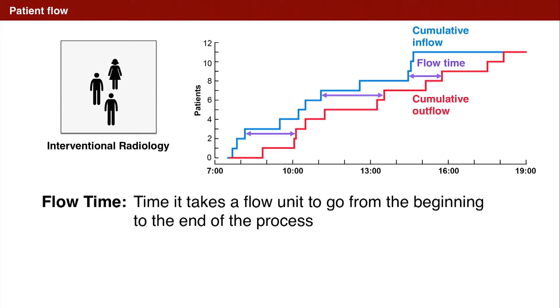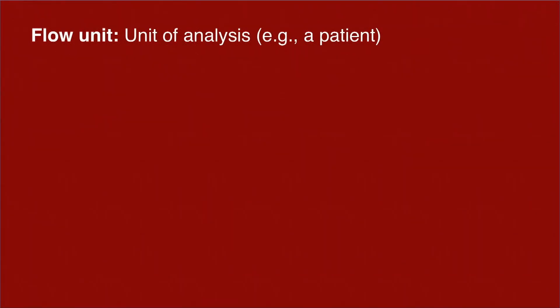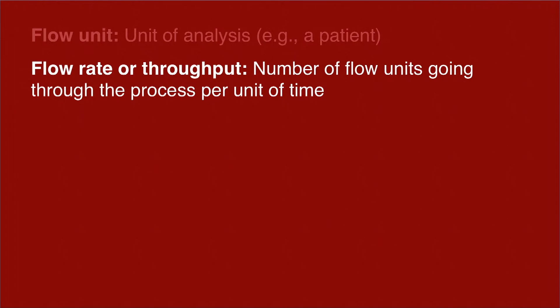The flow time measures how long it took the patient to flow through the process. To be general, we'll extend these definitions to include other things that might flow through a process, not just patients. Rather than talking about the patient as our atomic unit of analysis, we'll just speak about a generic flow unit. Flow rate — oftentimes also called throughput — is the number of flow units going through the process per unit of time. In our case, it was 11 patients per day, 200 calls per hour in a call center, or 30 insurance claims per day in an accounting department. It always is flow units per unit of time.